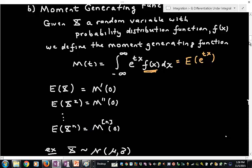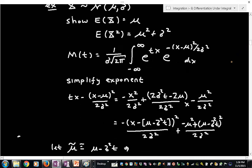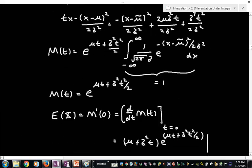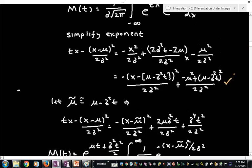Suppose I have a normally distributed random variable with a mean of mu and a standard deviation of sigma. I'm going to show that the expected value of x is mu, and the expected value of x squared is mu squared plus sigma squared. And the way we're going to do this is we're going to set up our moment generating function. And I'm going to re-express the exponent of the exponential as a perfect square.